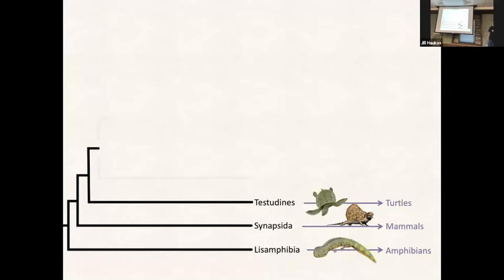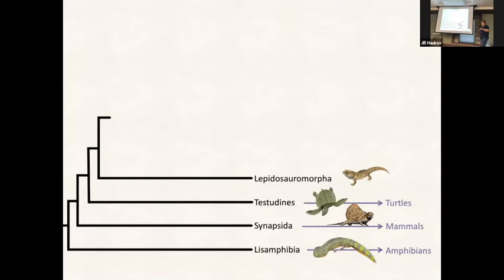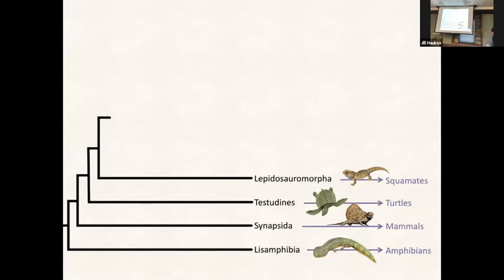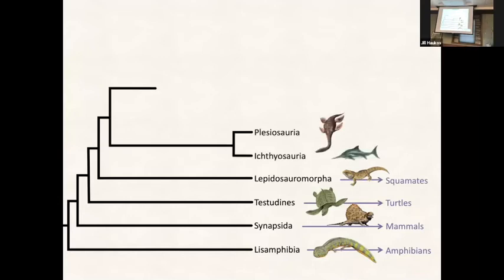Lepidosauromorpha - lizards, yes, but also snakes. So this is the squamates, which includes the lizards, the snakes, and the amphibians - I'll give you the list in a minute. Plesiosaurs and atheosaurs - this is actually a trick question - these are extinct, they went extinct with no descendants.